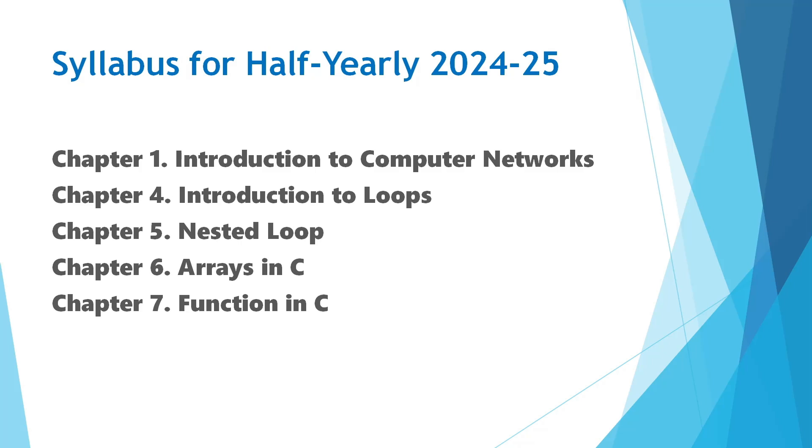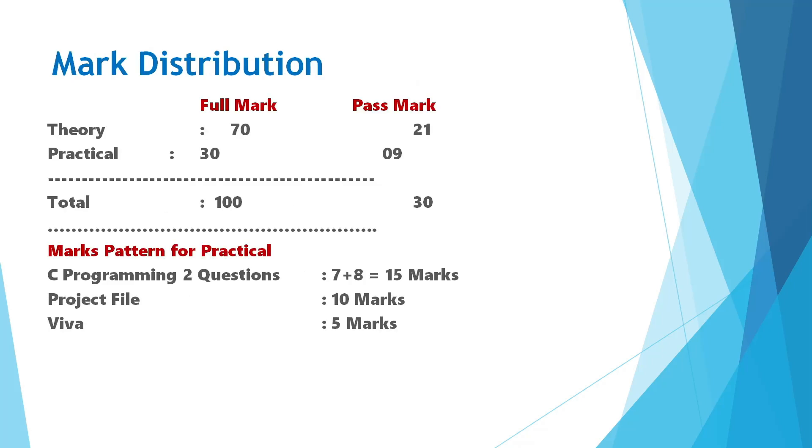Now for mark distribution, theory will have 70 marks full mark with 21 pass marks, and practical will have 30 marks full mark with 9 pass marks. So total marks is 100 and passing marks is 30.